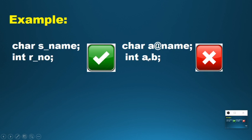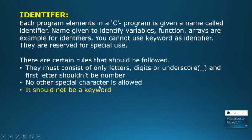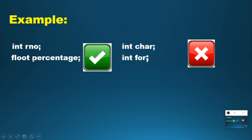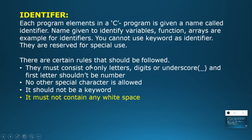The third rule is: the identifier should not be a keyword. For example, names like 'role_number' or 'float_percentage' are accepted, but keywords like 'int' or 'for' are not accepted as identifier names.